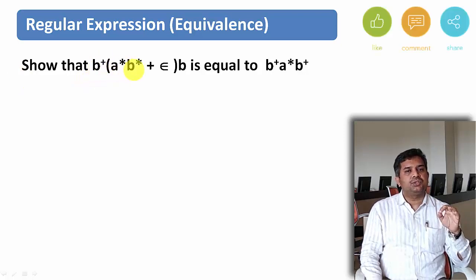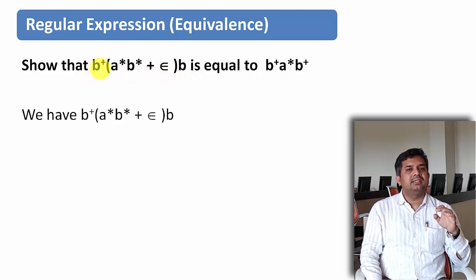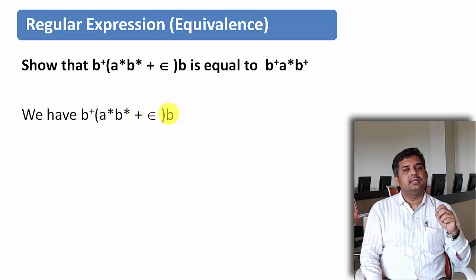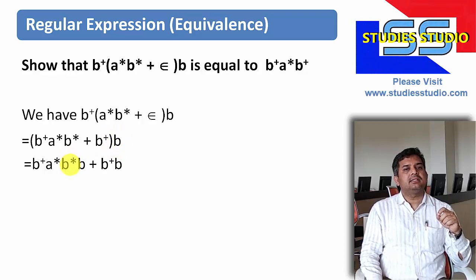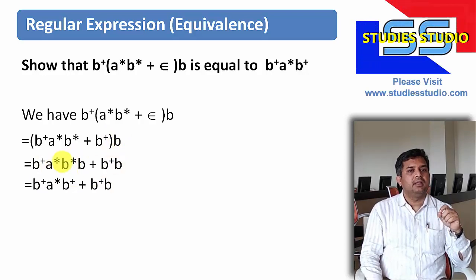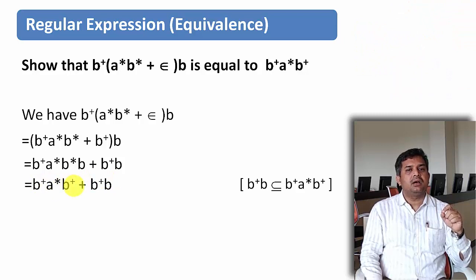One more problem: B + A*B*(ε + B) is the same as B + A*B+. What is given is B + A*B*(ε + B) concatenated to B. Taking B+ inside the bracket, we can see that B*B is already known to equal B+. And B*B is a subset of B + A*B+. So we can write that this expression is the same as B + A*B+.